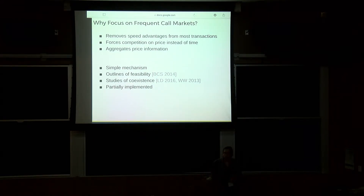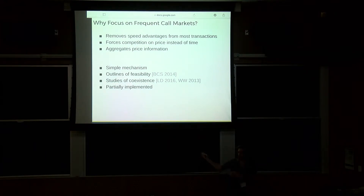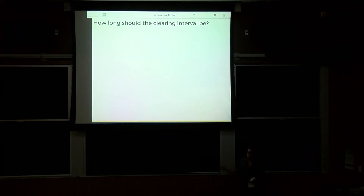They've even been partially implemented — about six months to a year ago the Chicago Exchange implemented what they call snap auctions, which is an agent-initiated half-second clear in an otherwise normal continuous auction. You can send a special message to the exchange to aggregate all orders for the next half-second and then run an auction, reoccurring continuously throughout the interval.